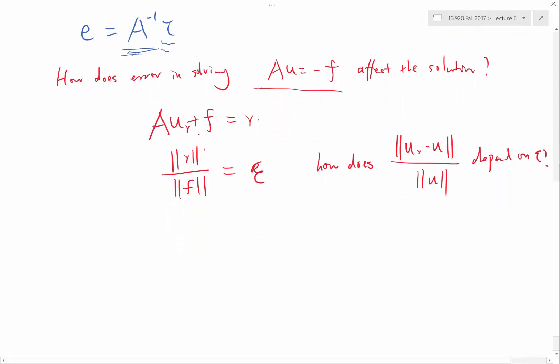One of the ways for us to look at this question is to look at what if I divide this ur minus u, the relative error in the solution, by the relative error we get in the residual? So if this ratio is large, that means a small residual is going to be amplified, it can potentially be amplified in the solution. If the ratio is small, that means a potentially small error won't be amplified that much in the solution.